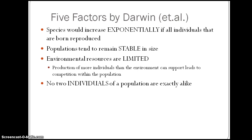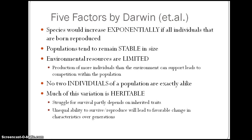The fourth postulate was that no two individuals were exactly alike — essentially our DNA fingerprint, without him really knowing what DNA was. When these individuals reproduce, it allows for variation to be passed along, and the struggle for survival partly depends on these inherited traits. The unequal ability for survival or reproduction eventually leads to favorable changes in characteristics over generations.